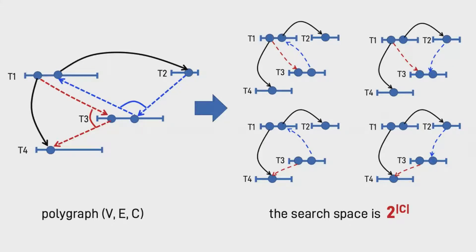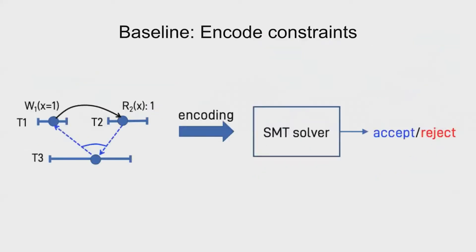For this, the authors first went with an SMT solver. They encoded all of these constraints and just sent it as an input to the SMT solver and it would respond with whatever was being sent to it for serializable or not. However, due to the very large search space, as we just saw, it can grow exponentially. We do end up generating too many constraints and the SMT solver, though it has many optimizations, becomes very slow.